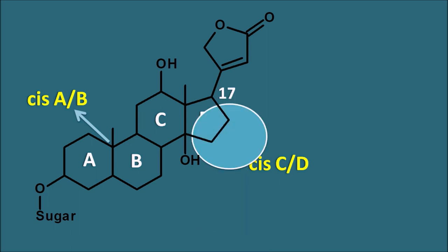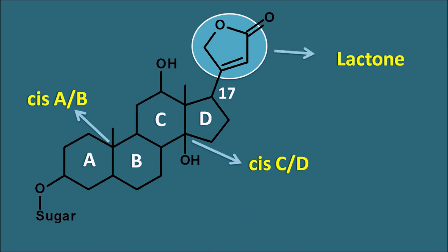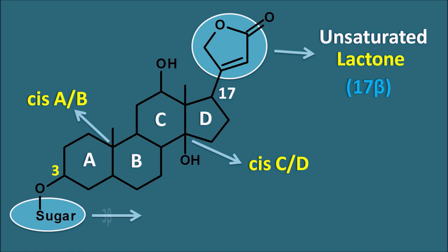At the 17th position they have a lactone ring system, and this lactone is unsaturated. So an unsaturated lactone ring is present at the 17th position, and this ring is attached by beta configuration — 17-beta lactone ring. Similarly, at the third position there is a hydroxyl group attached with the sugar moiety by 3-beta configuration. Beta means above the plane; alpha means below the plane. So both the lactone ring and the sugar moiety are attached above the plane.